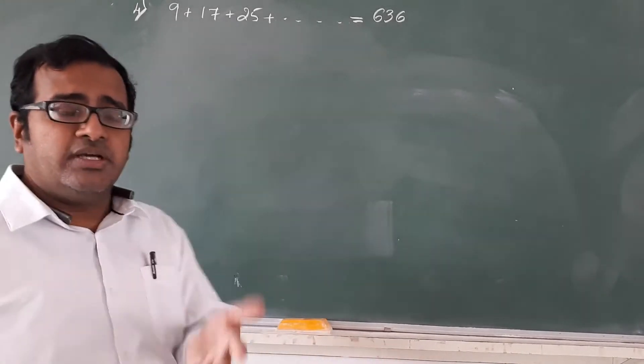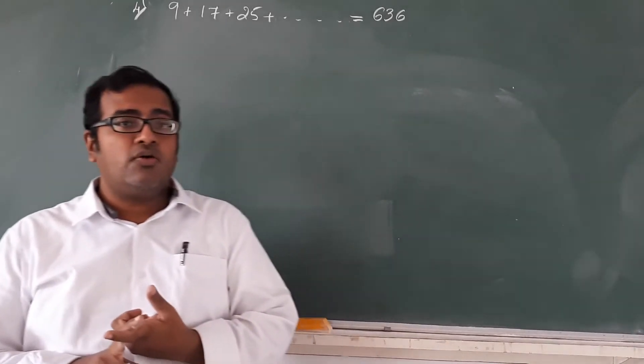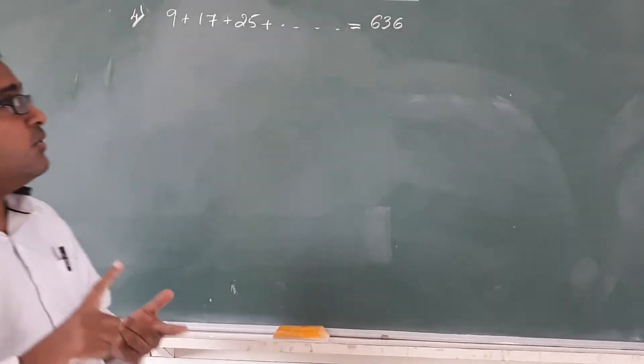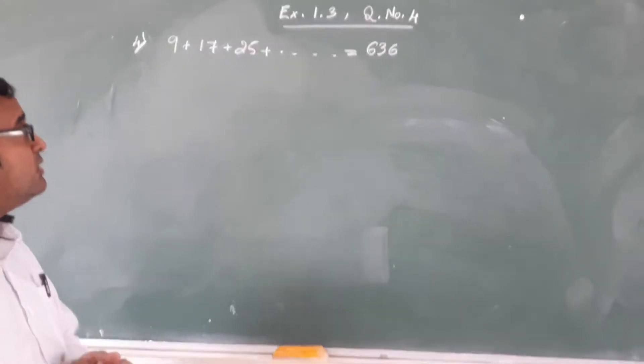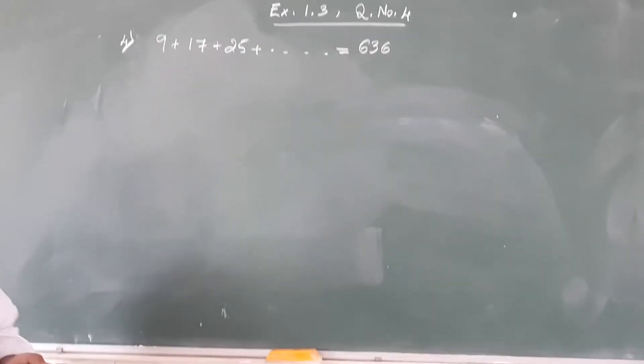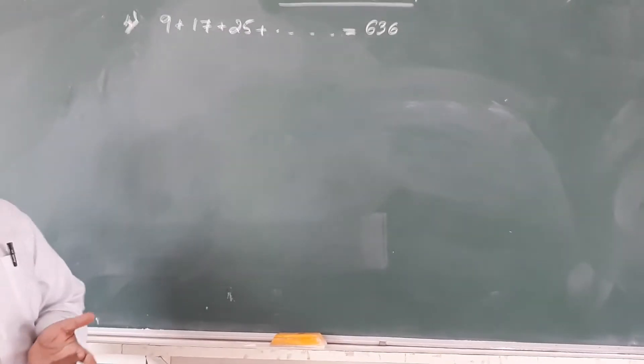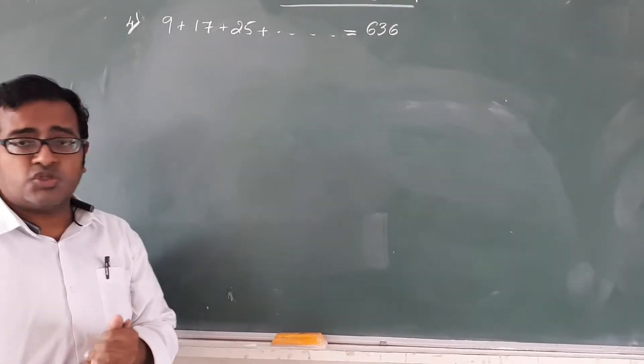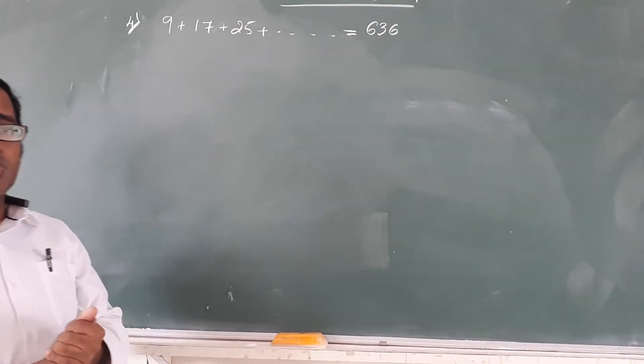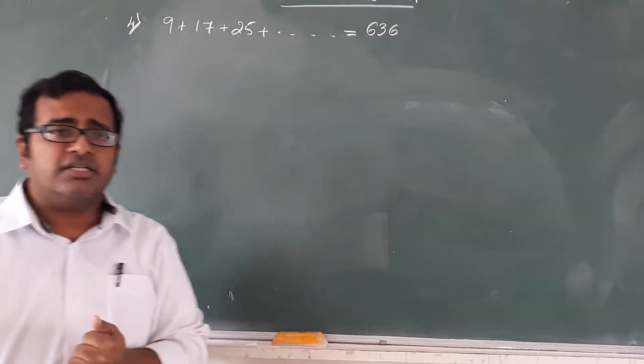Hi everyone, today we will be solving question number 4 from exercise 1.3 regarding arithmetic progressions. The question goes like this: how many terms of the given AP, that is 9, 17, 25, and so on, are required to make a complete sum of 636?